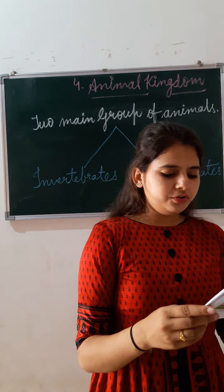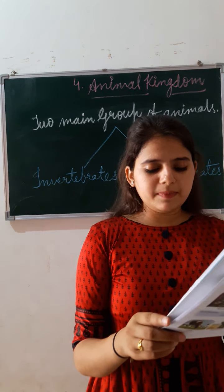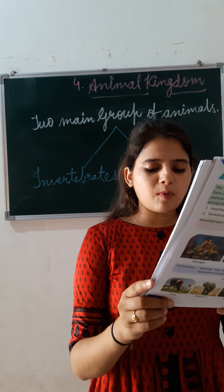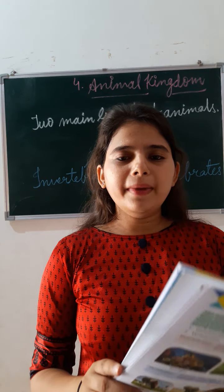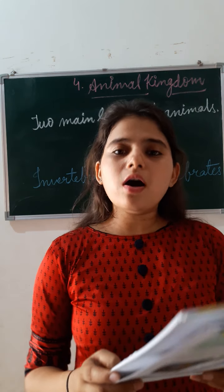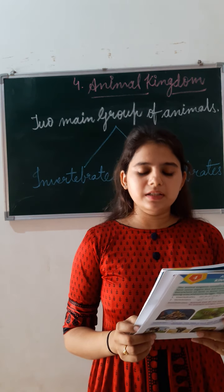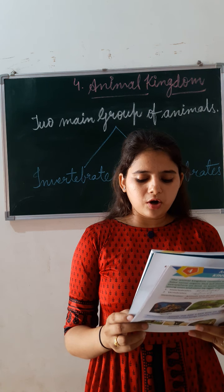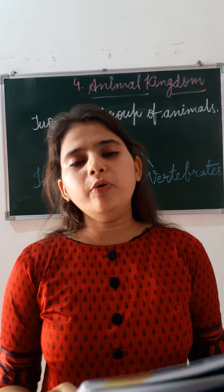Did you know? Peacock is the national bird of India. Apna national bird kaun sa hai baccho? Peacock. Ostrich is the biggest bird, and hummingbird is the smallest bird in the world. Biggest bird kaun sa hai world ka? Ostrich. And smallest one? Hummingbird. Peacock apna national bird hai, ostrich sabse bada pakshi hai, aur sabse chota hai woh hummingbird.